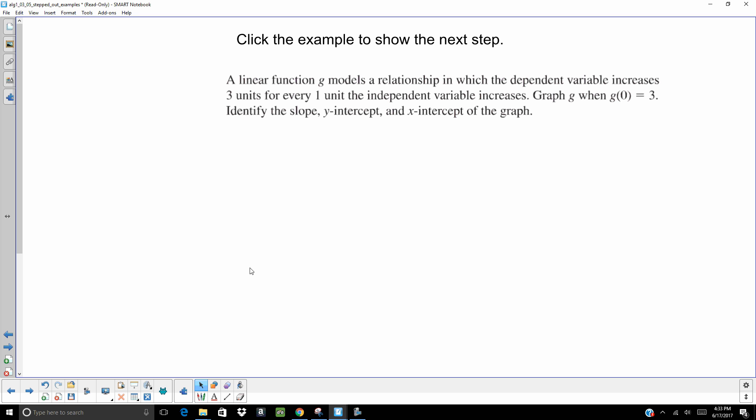All right. A linear function g models a relationship in which the dependent variable increases 3 units for every 1 unit the independent variable increases. They're giving you a lot of math speak on this one. You might need to break that down. Ask yourself, what is the dependent? What is the independent? x or y? So graph g, when g of 0 equals 3, identify the slope, the y-intercept, the x-intercept of the graph.